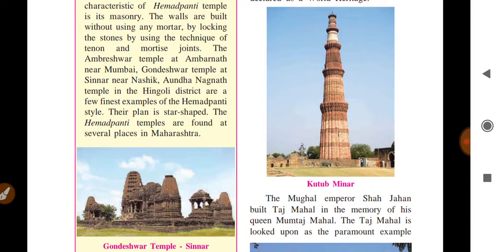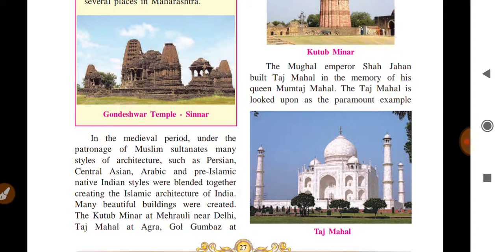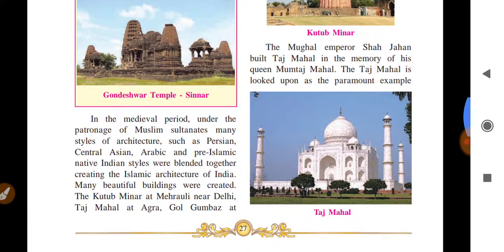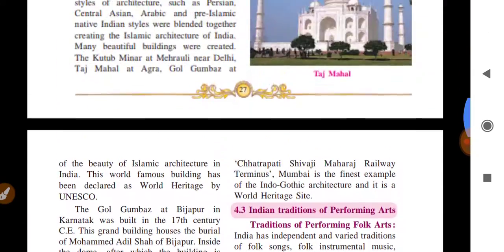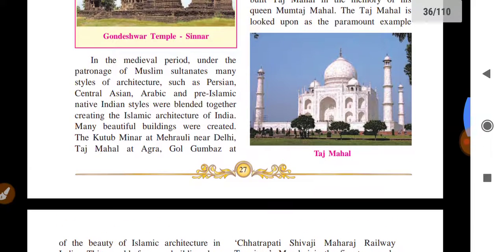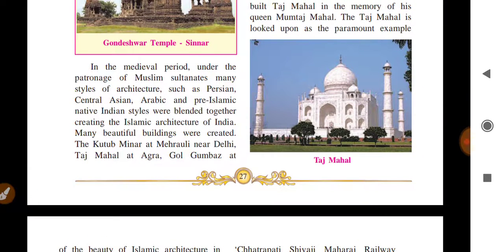Hemadpanthi temples are found in many places in India, and many are found in Maharashtra. Now let us talk about Muslim Sultanate architecture — the Taj Mahal, Qutub Minar, and Gol Gumbaz of Bijapur. In the medieval period when many sultanates ruled India, many art styles like Persian, Central Asian, Arabic, and pre-Islamic blended together to form Islamic architecture, creating many beautiful buildings.